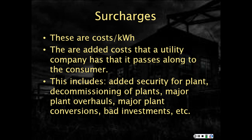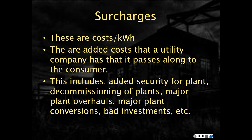The fourth element in a consumption-based bill is surcharges. These are also costs per KWH — added costs that a utility company has to pass along to consumers. This may include everything from added security for the plant, decommissioning of certain types of plants like nuclear plants, major plant overhauls, major plant conversions, bad investments, and storm coverage such as damage after a hurricane or an ice storm. These are all added costs allowed by governing bodies for utility companies to charge above and beyond the normal generation, transmission, and distribution of electricity.